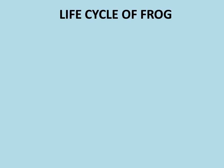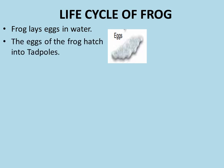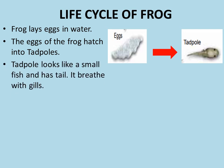Life cycle of frog. Frog lays eggs in water. The eggs are laid in cluster and they are covered with a jelly-like substance. The eggs of a frog hatch into tadpoles. Tadpoles look like a small fish and have a tail. They breathe with gills. You can see in the picture, a tadpole has a tail and it looks like a fish, and initially at this stage, they breathe with gills.